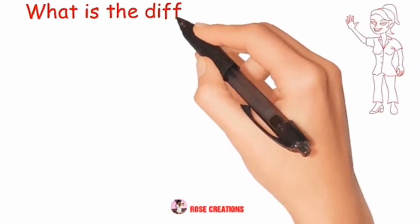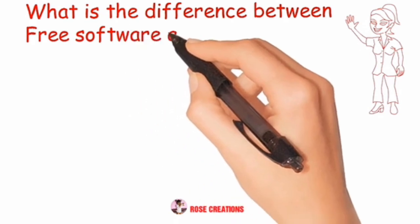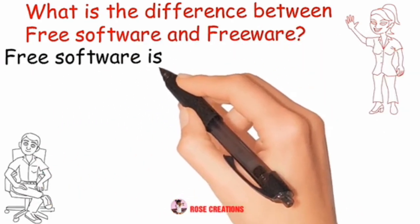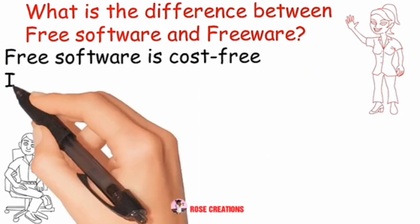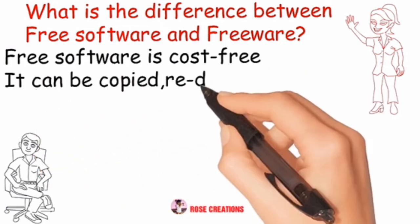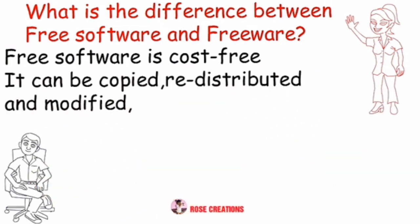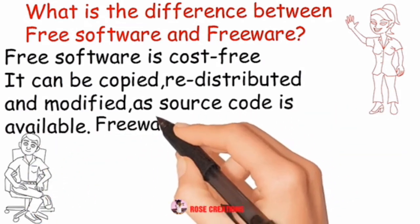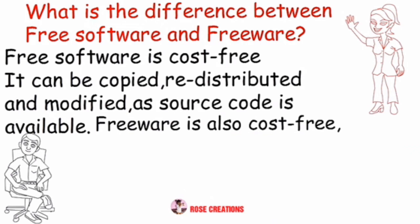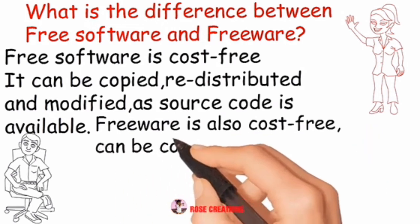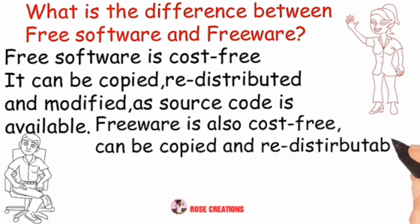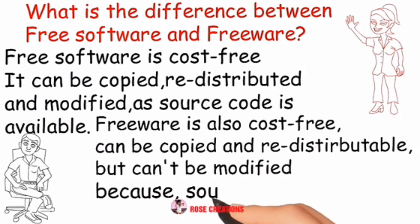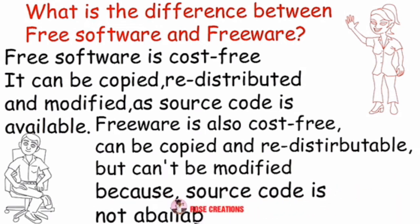What is the difference between free software and freeware? Free software is cost-free; it can be copied, redistributed, and modified as the source code is available. Freeware is also cost-free and can be copied and redistributed, but cannot be modified because the source code is not available.